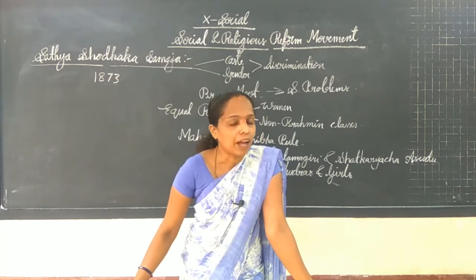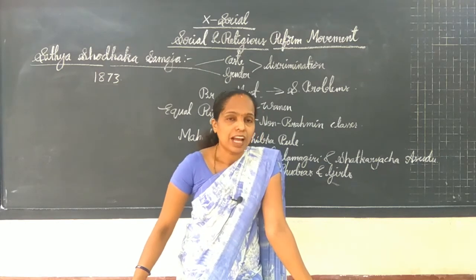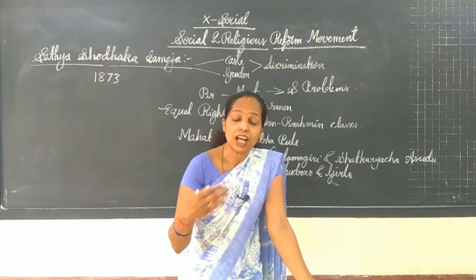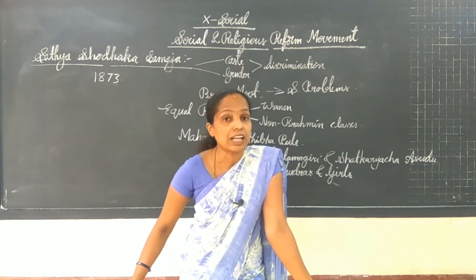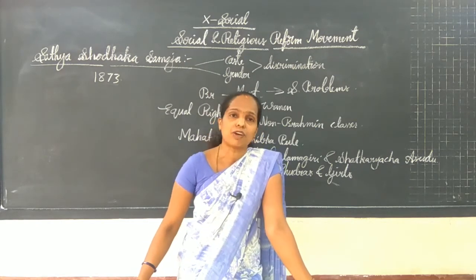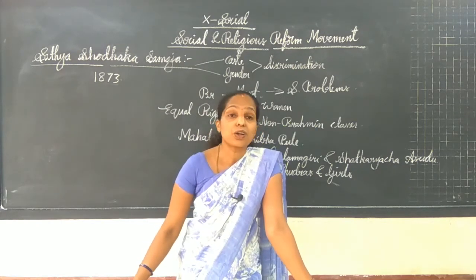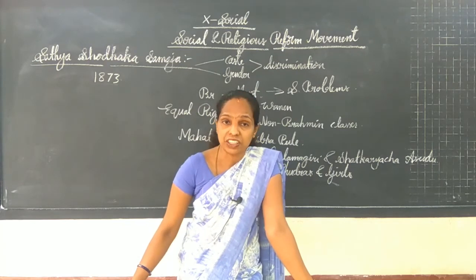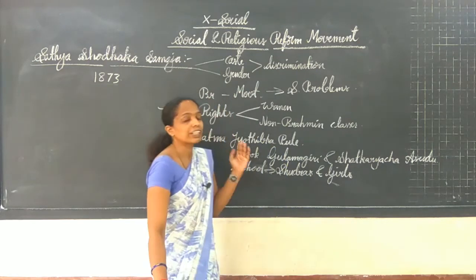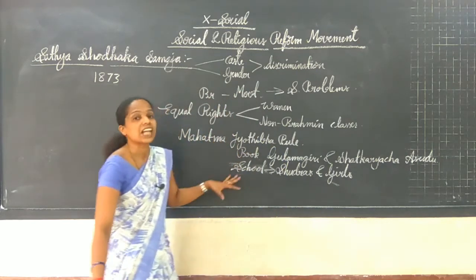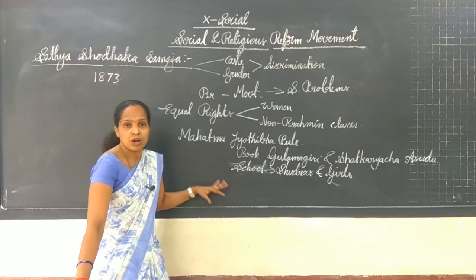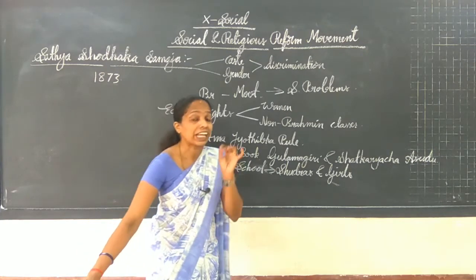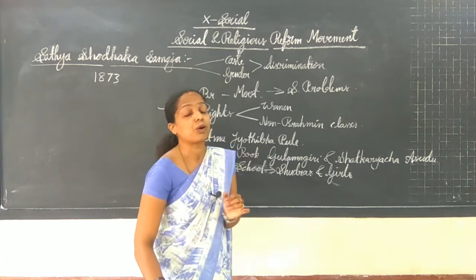Her name is Savitri. Along with her, both of them together started or established a hostel for girls, in order to give protection and in order to give education. For that, they started a hostel.